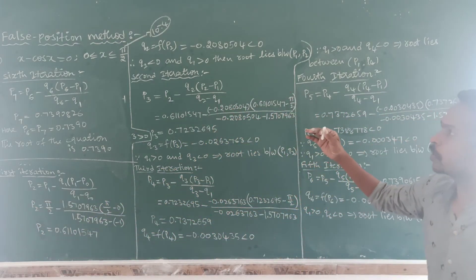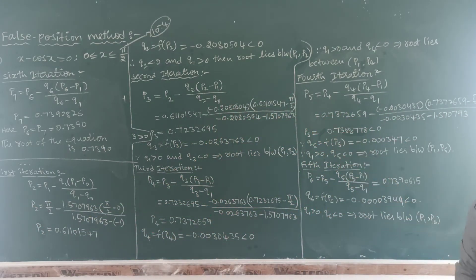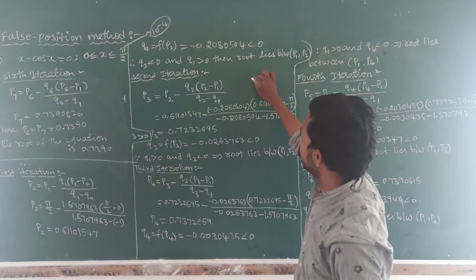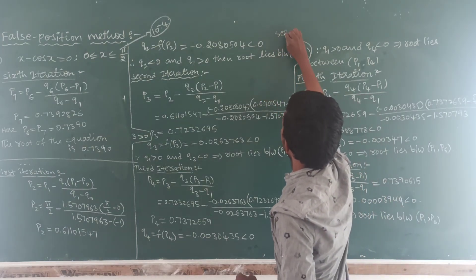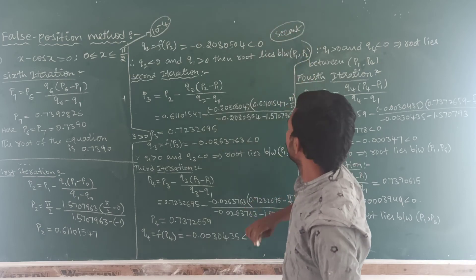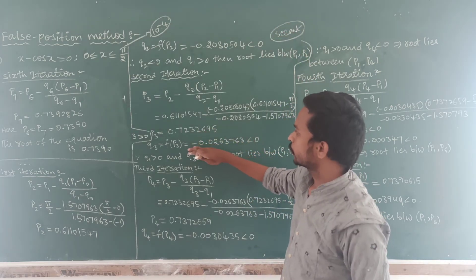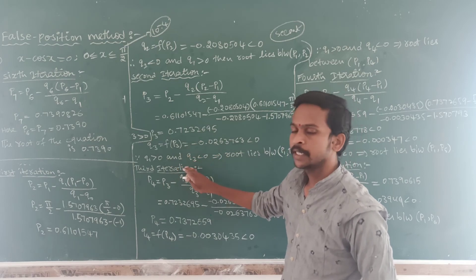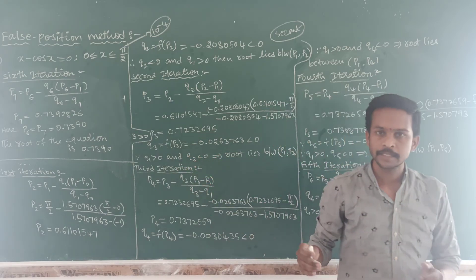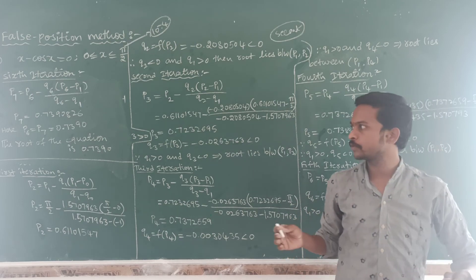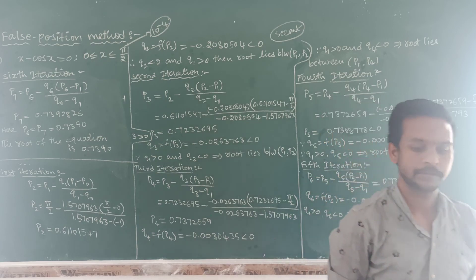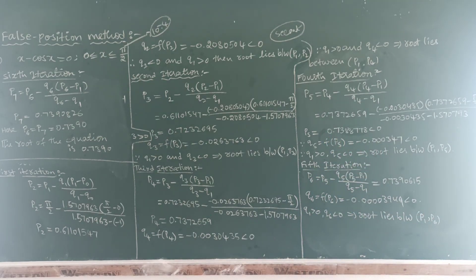This is the method to solve the solution of a given polynomial or given function by using the False Position method. This is also very important. This is like the secant method only, but with a slight difference: after finding each Q value, we have to check the signs. It is an extension of the secant method — the False Position way. I hope all of you understand. Thank you.